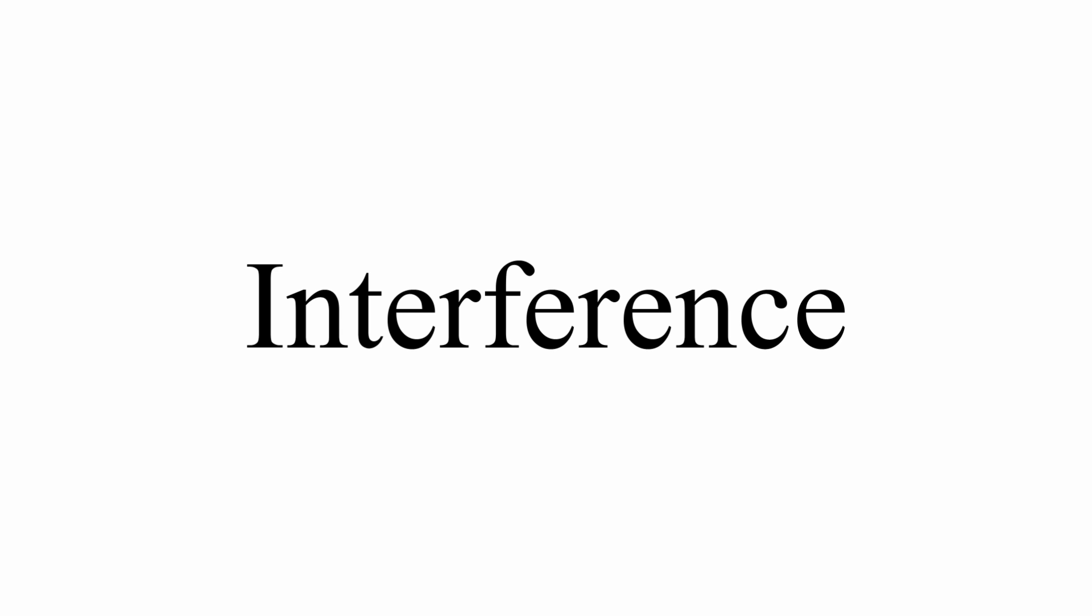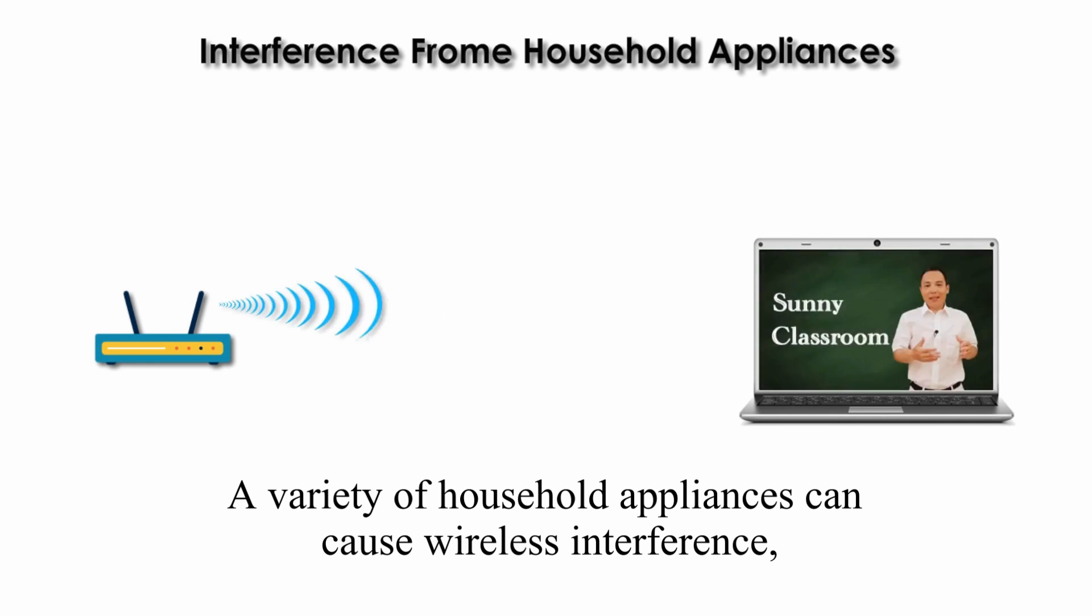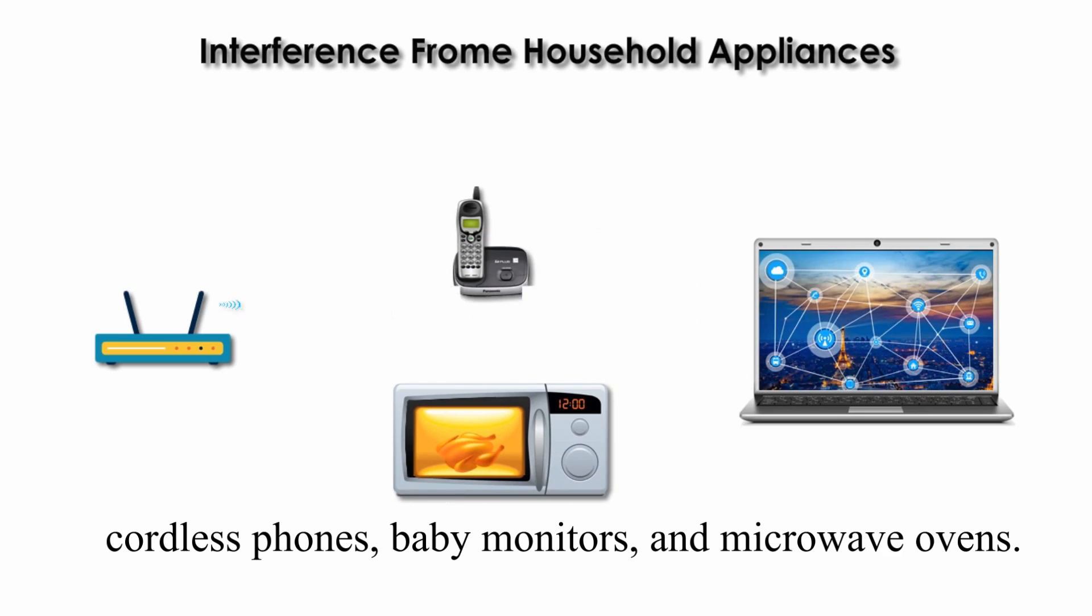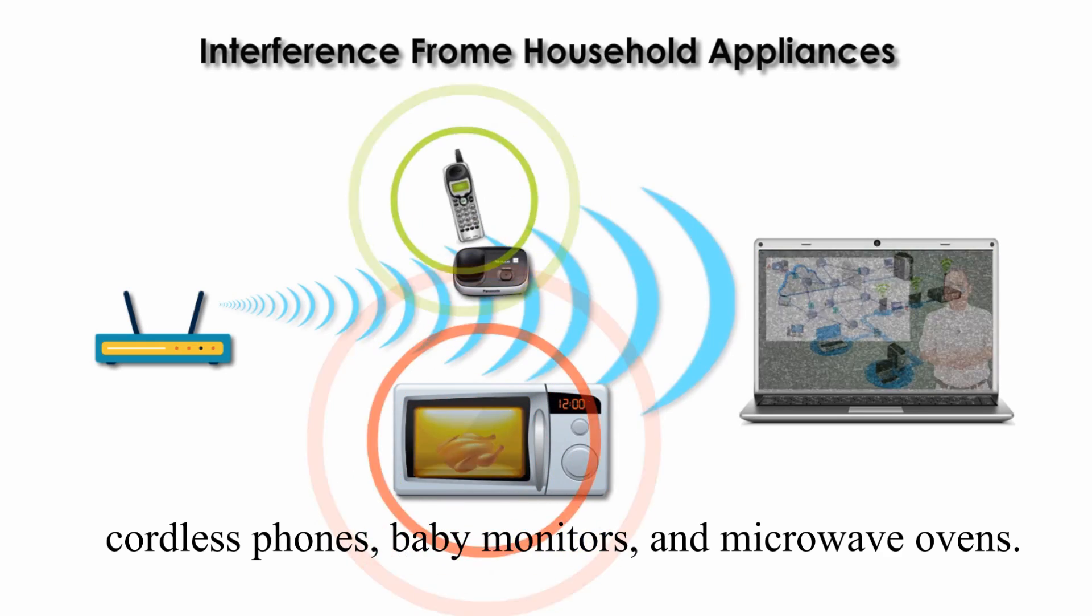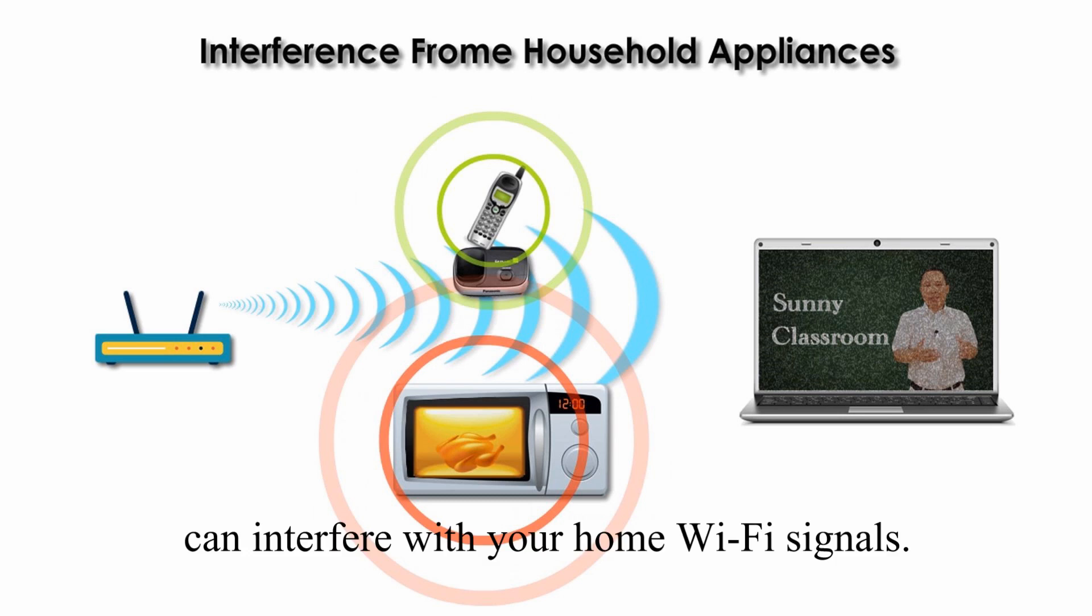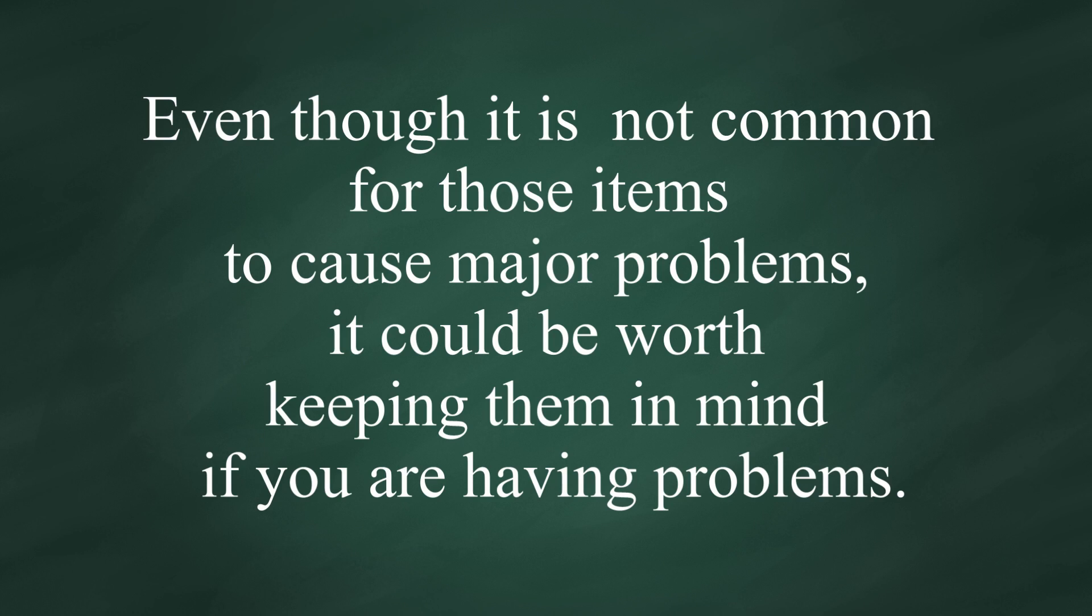Last but not least, interference. A variety of household appliances can cause wireless interference, including cordless phones, baby monitors, and microwave ovens. Anything which communicates on a 2.4 GHz frequency can interfere with your home Wi-Fi signals. Even though it is not common for those items to cause major problems, it could be worth keeping them in mind if you are having problems.